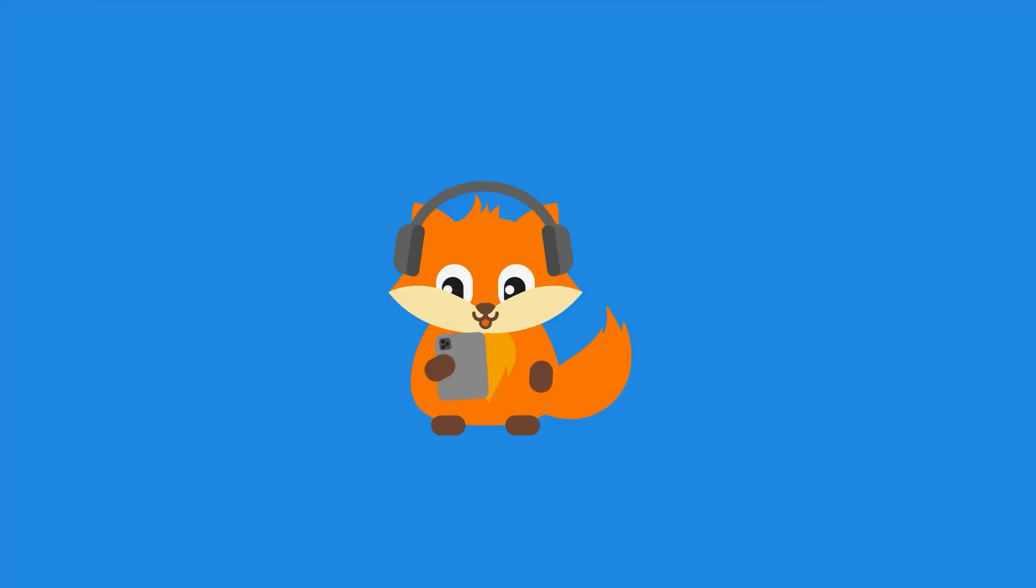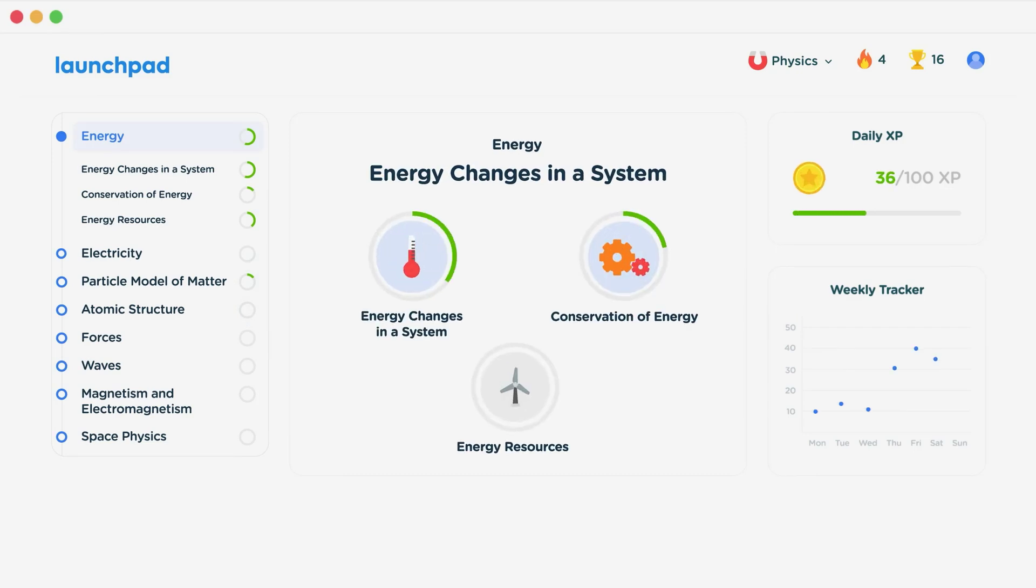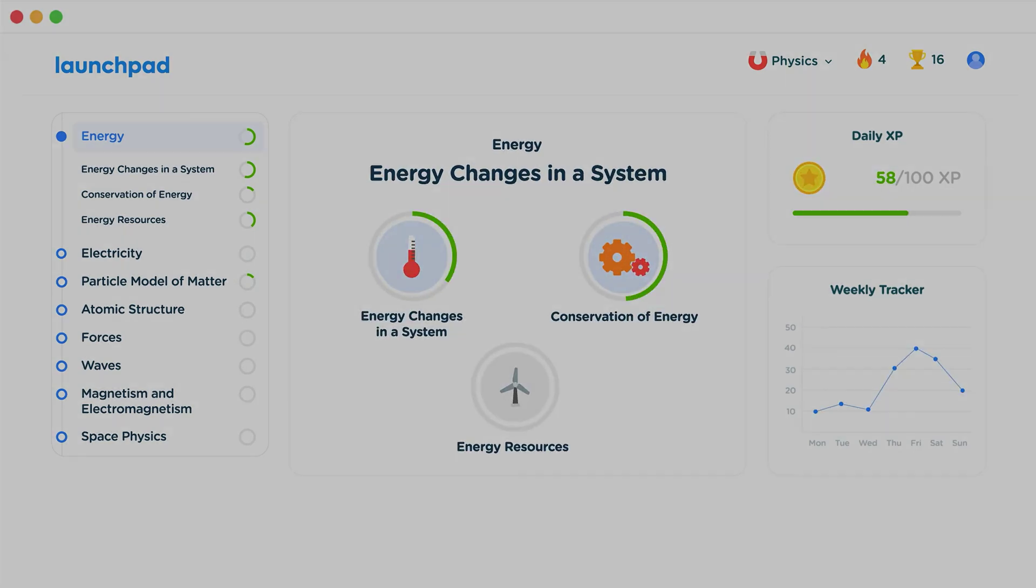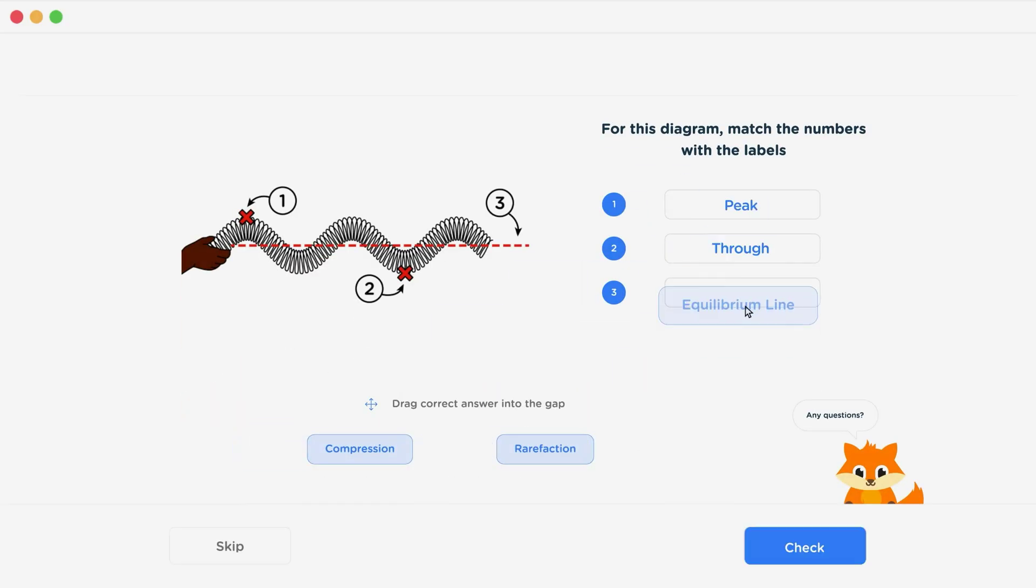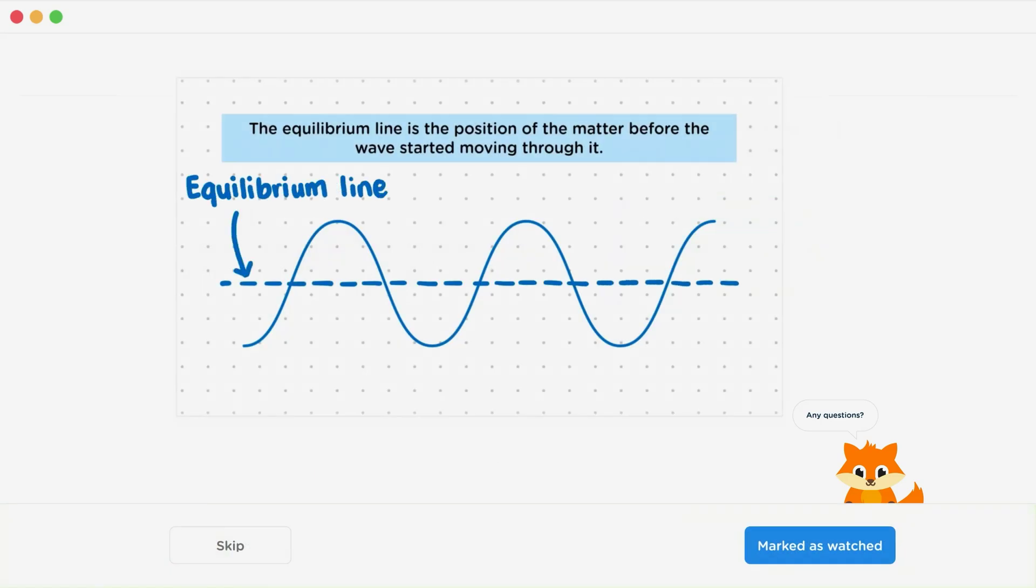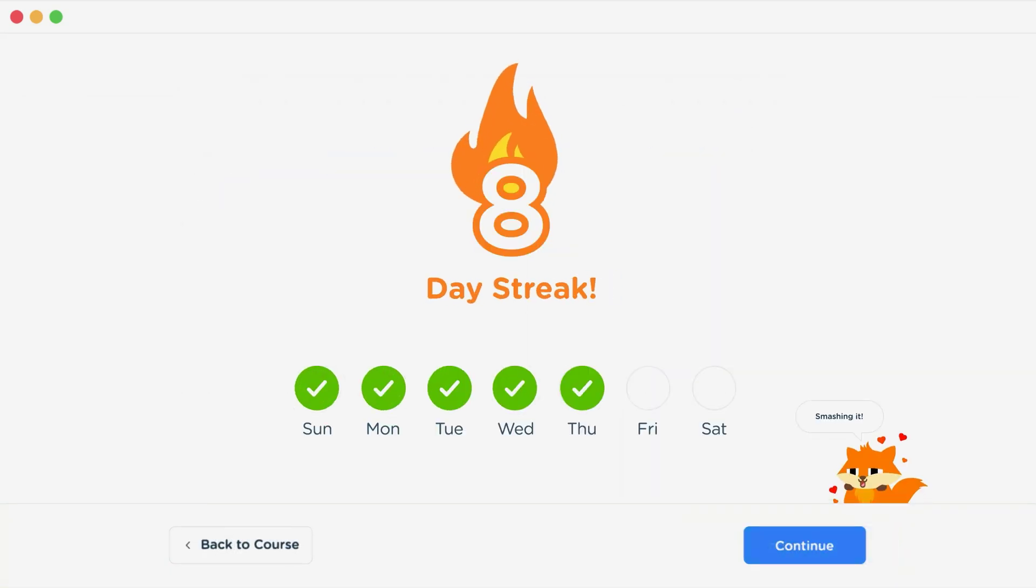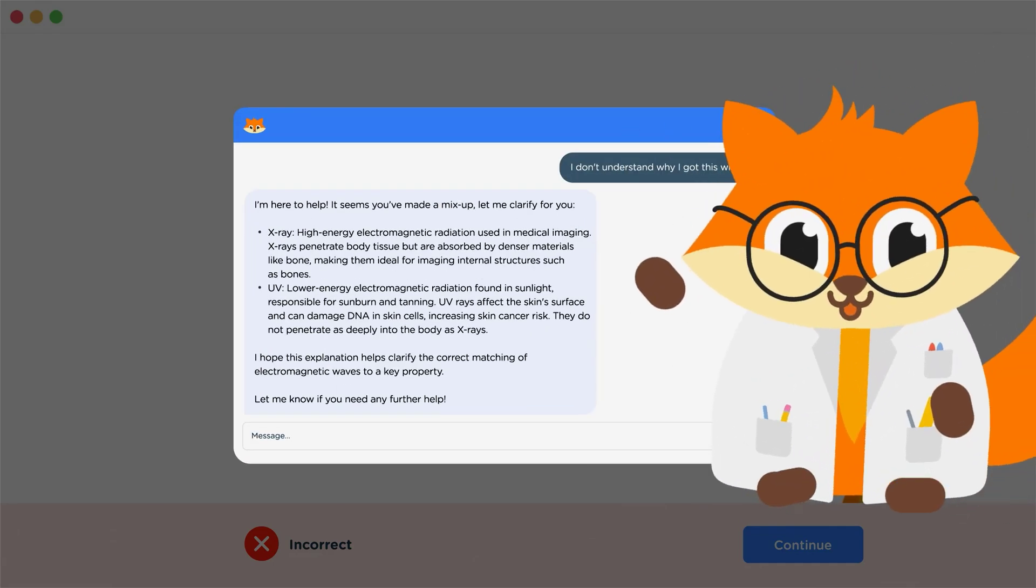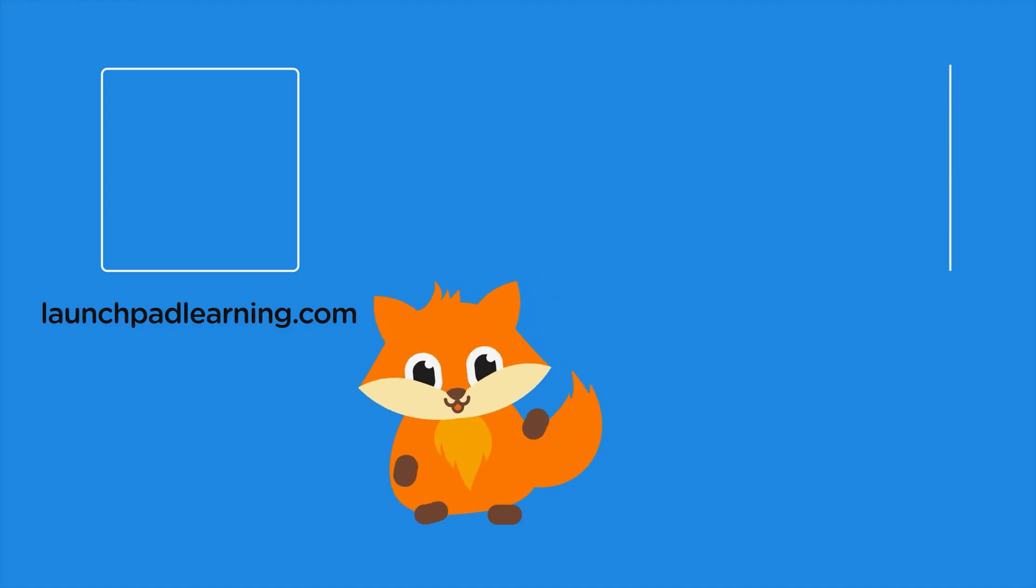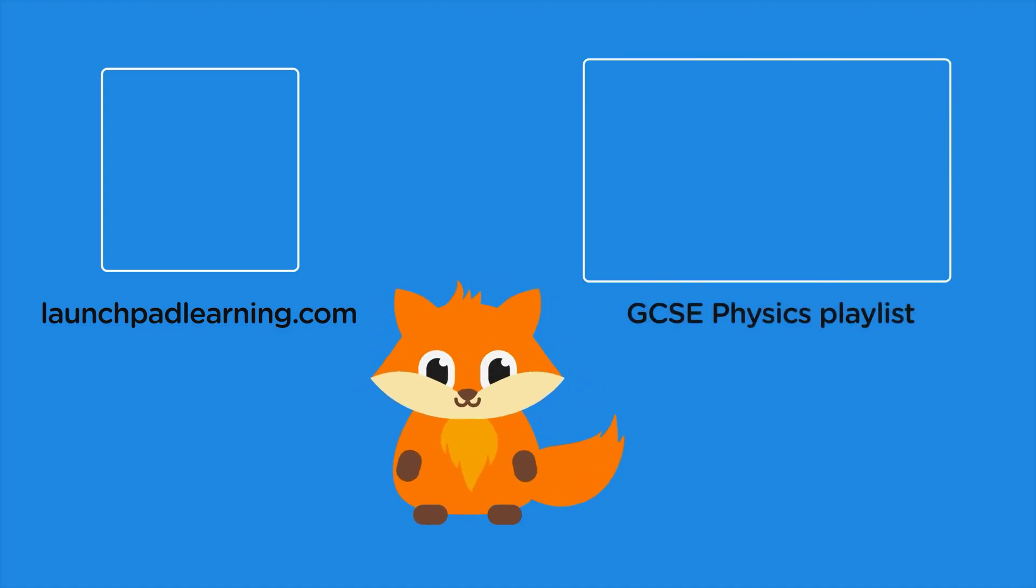Thanks for watching. If you want to take your GCSE revision to the next level, head over to launchpadlearning.com and check out our smart learning platform that's been designed to get you top results in your exams. We cover your whole specification and make revision fun with interactive quizzes, easy to follow videos and more. You'll be kept motivated by your own AI tutor who's here to support you every step of the way. To check it out for yourself click here. Or click here to keep watching a selection of the videos from our full GCSE physics course. See you there!